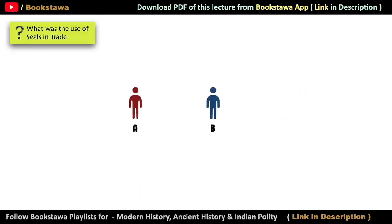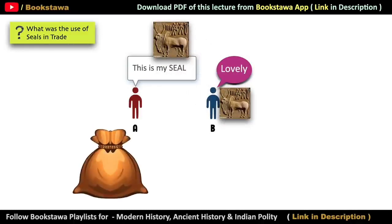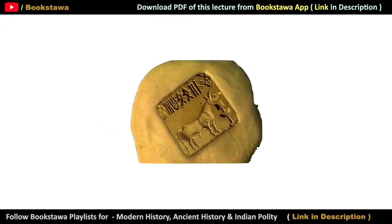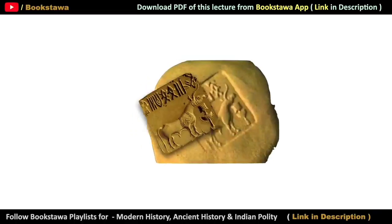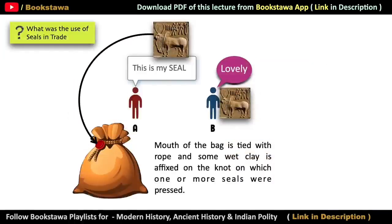When two people decided to trade, they used to exchange their seals with each other. When A had to send his goods to B, after tying a rope on the mouth of the sack, A used to put wet clay on the rope and stamp his seal on it. After drying, the clay would become hard and the impression of the seal would be clearly visible. So if anyone tried to open the mouth of the sack on the way, it would be clearly understood that the seal was broken and the goods had been tampered with.